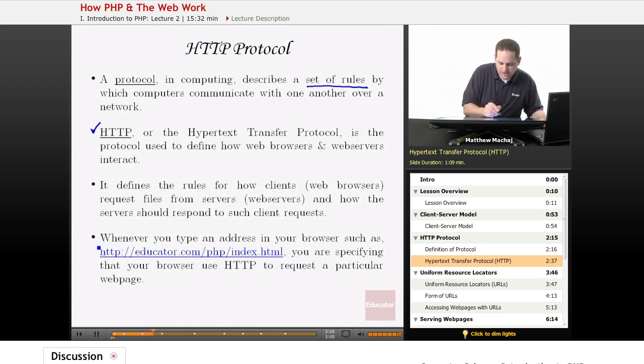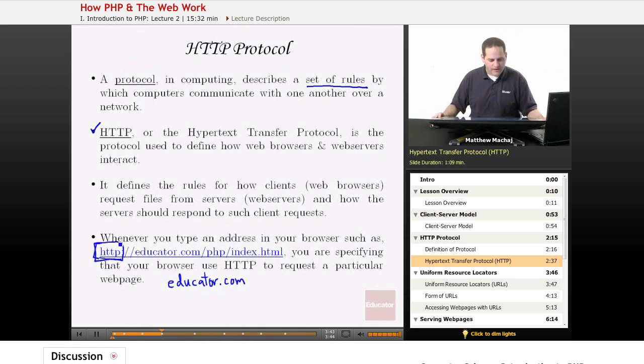Whenever you type an address in your web browser, such as this, you'll notice that there's the HTTP four-letter mnemonic at the beginning of the link. And what that is basically doing is specifying to your web browser that you want to request a particular web page, and you want to use the HTTP protocol to do it. And it's standard protocol used on the web to access web pages, so you don't actually, even when you type an address in your web browser, you could just type educator.com, and you'll actually see that your browser goes ahead and inserts this HTTP part here at the beginning, because that's the method used to access websites.